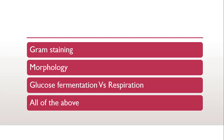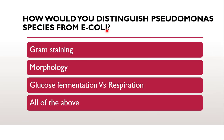Now the next question is: how would you distinguish Pseudomonas species from E. coli? Whether gram staining will differentiate them, whether morphology will differentiate them, whether glucose fermentation versus respiration will differentiate them, or all of the above. Now, Pseudomonas are gram negative bacteria, and E. coli is also gram negative. So since both are gram negative, we cannot distinguish them through gram staining — gram staining is not the correct answer.